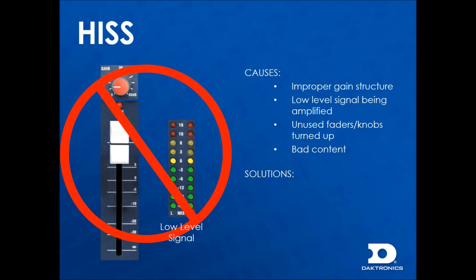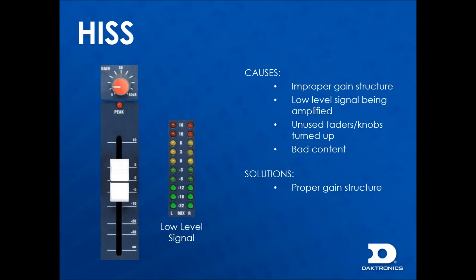To remove hiss, use proper gain structure by setting the gain correctly. The input signal is turned up and the inherent noise floor stays down. This way the noise or hiss is amplified less and is not audible. This is the same reason unused faders and knobs should be turned down.